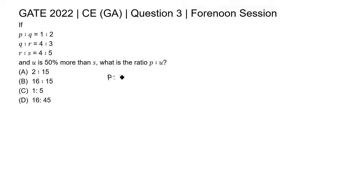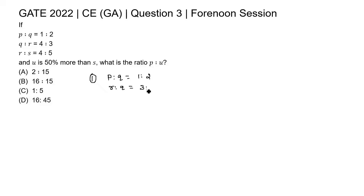P is to Q is written as 1 is to 2. When we combine the ratios, there are two steps. The first step is to rewrite the ratios in a uniform way. Since Q is to R is given, we rewrite it as R is to Q — reversing the ratio to 3 is to 4 — so that the alignment of Q is the same. R is to S is already in the same alignment, equal to 4 is to 5.